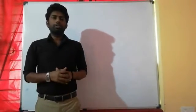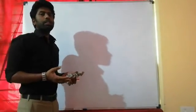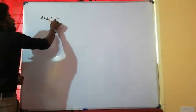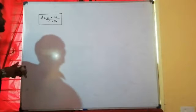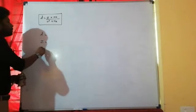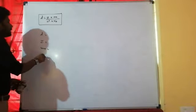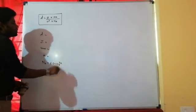Good morning everyone. Today we are going to discuss questions related to density of a unit cell. Density-related questions are one of the most frequently asked questions in board examinations. Last class we derived the formula: density equals z into m₀ divided by a-cube into Nₐ. Here, Nₐ is Avogadro's number, taken as 6.02 into 10 to the power 23.